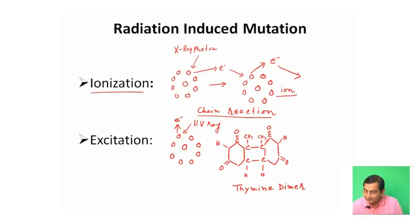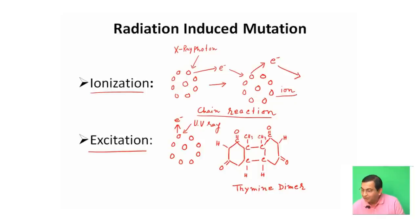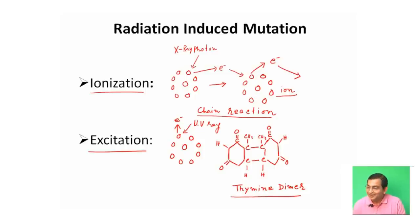In the case of UV ray excitation, UV rays produce mutations where electrons of the outer orbit of the atom are raised to a higher energy level. As a result, thymine dimers are produced — a process called dimerization. This affects the replication pattern of DNA and ultimately causes mutation.